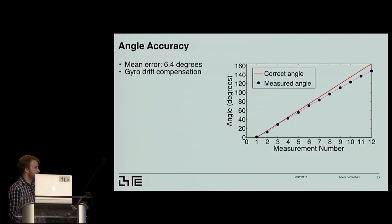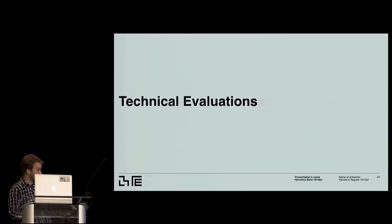So the mean accuracy was about 6.4 degrees for the rotation. And the gyro drift was compensated on board the IMU. So we didn't have any problem with that.